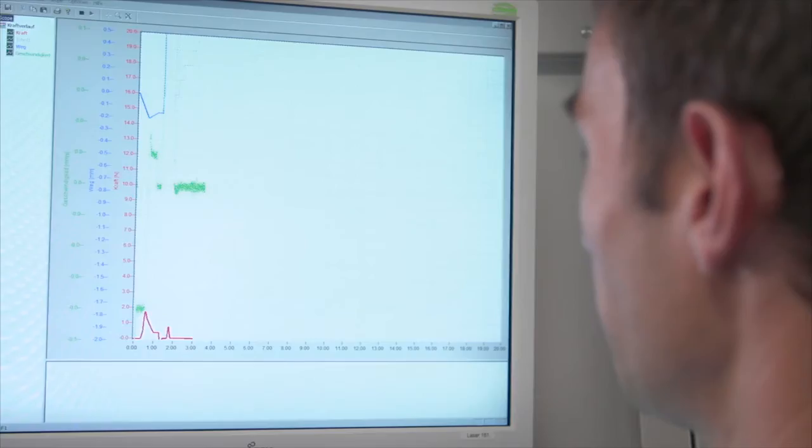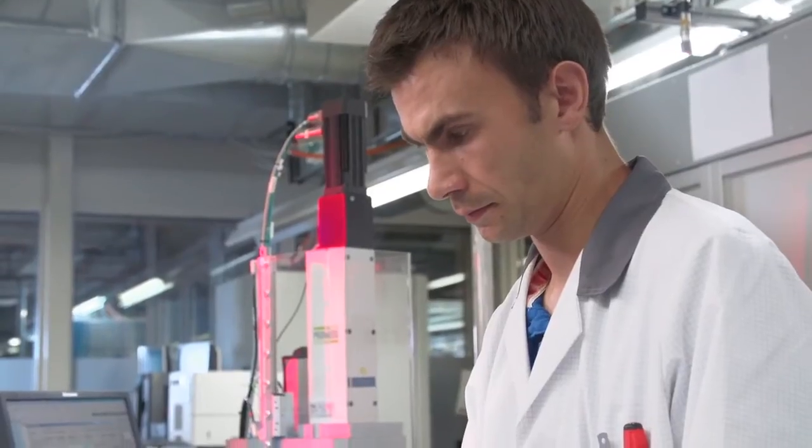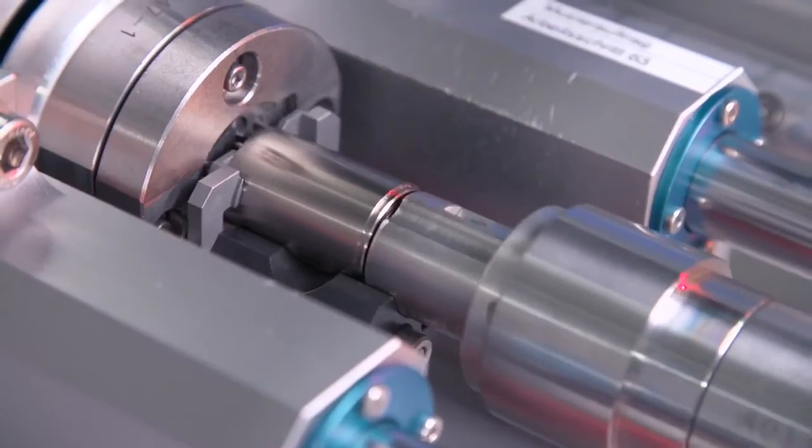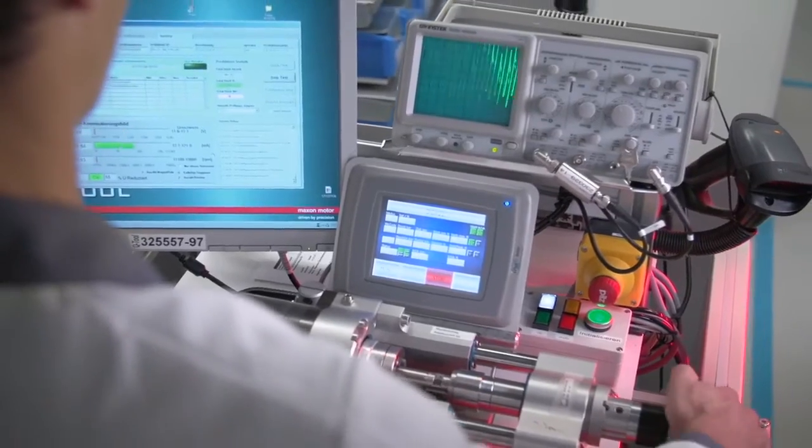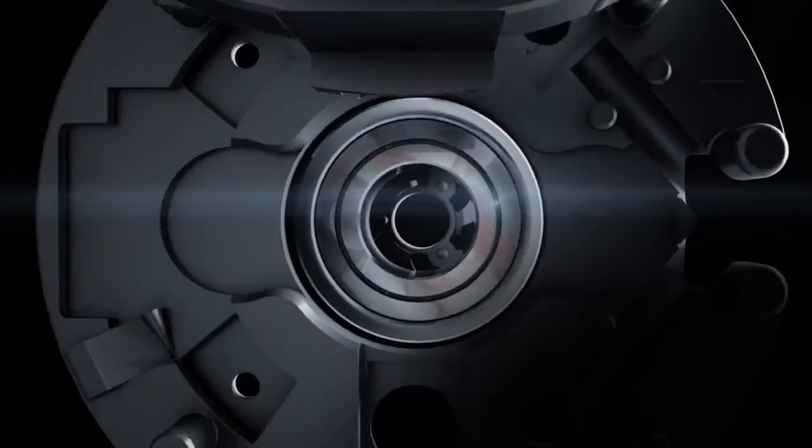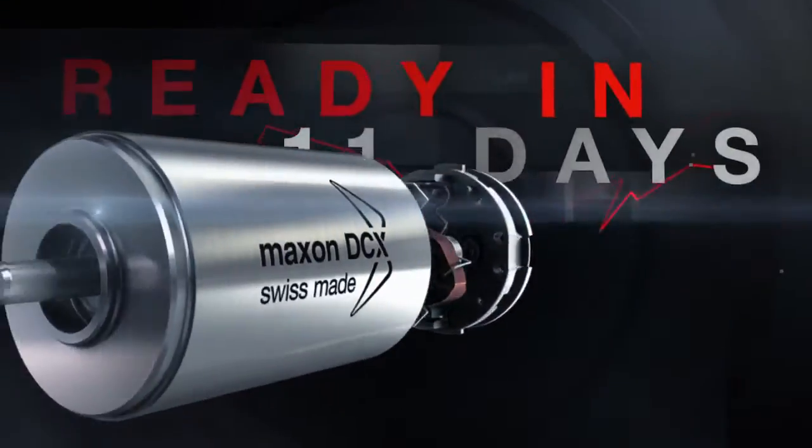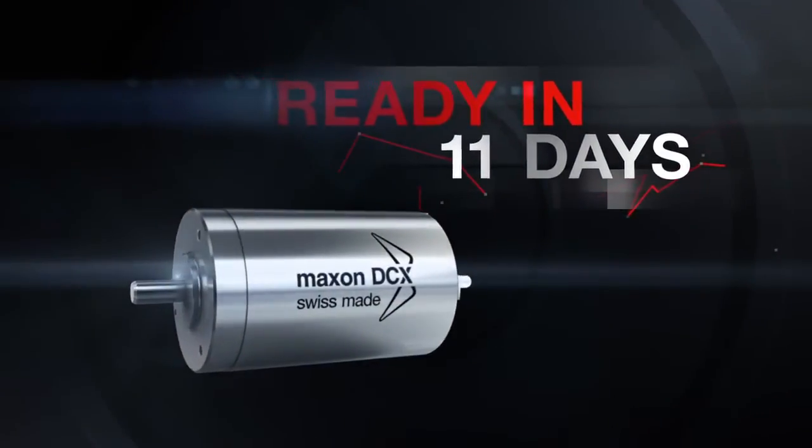Supervision and inspection occur throughout the production process, ensuring the configured DCX product matches your requirements exactly. With this unique process, you can be sure to receive not only a high-performance Maxon motor, but also a drive system built to your specific needs. And this only in a few days after you've placed the order online.